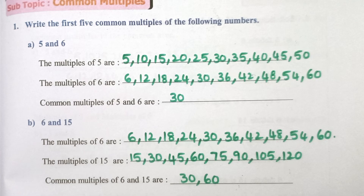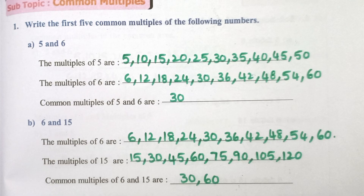Worksheet 8. Write the first 5 common multiples of the following numbers. 5 and 6: multiples of 5 are 5, 10, 15, 20, 25, 30, 35, 40, 45, 50. Multiples of 6 are 6, 12, 18, 24, 30, 36, 42, 48, 54, 60. Multiples of 15 are 15, 30, 45, 60, 75, 90, 105, 120. Common multiples of 6 and 15 are 30 and 60.